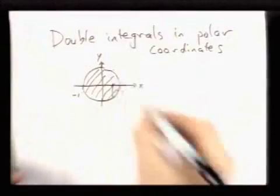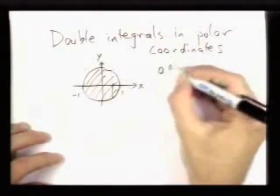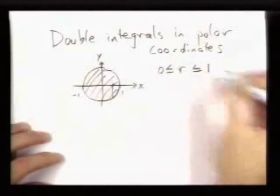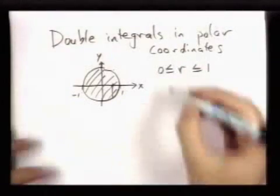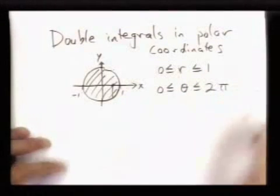But in polar coordinates, this region we would just say is described by the radius going from 0 to 1 and the angle theta going from 0 to 2π.